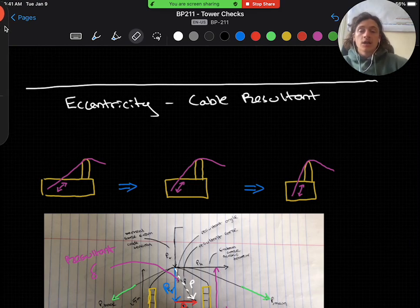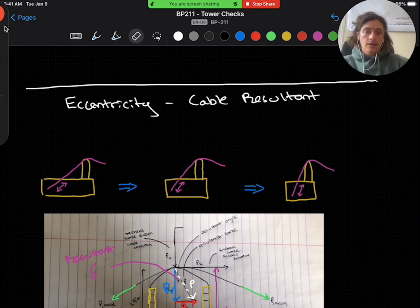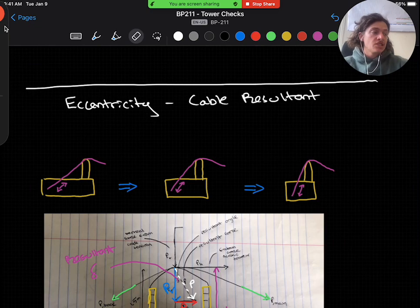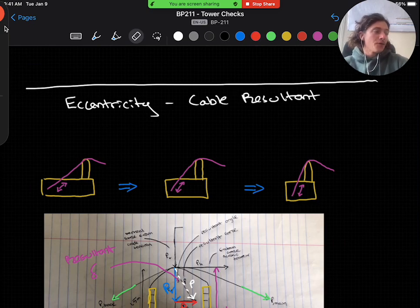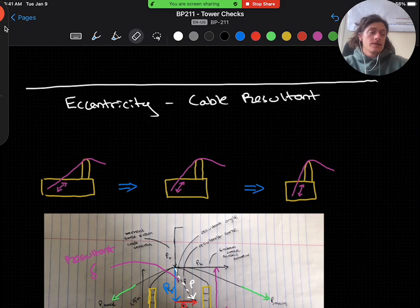In this module, we're going to talk about eccentricity in the form of a cable resultant force. When we change standard abutments for more optimized designs, generally shortening the ramp and raising the anchor, which I've shown in this diagram here, we find that abnormal cable angles can begin to govern our designs.